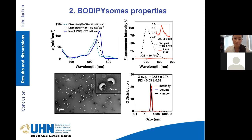On the other hand, we have the colloidal properties of these nanoparticles. These nanoparticles were found to be homogeneously distributed, and through TEM images, we can see that these nanoparticles have a spherical and unilamellar structure of around 120 nanometers. This is also consistent with our DLS results.